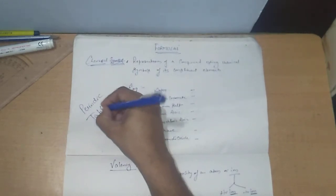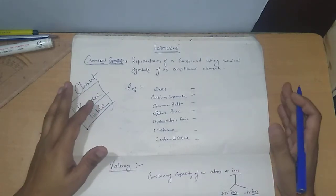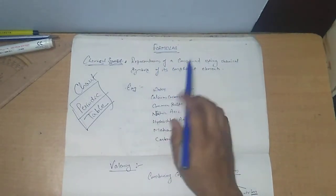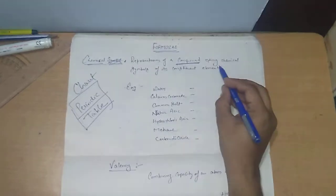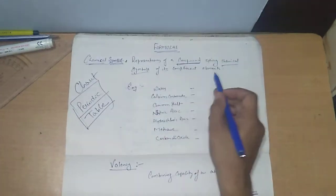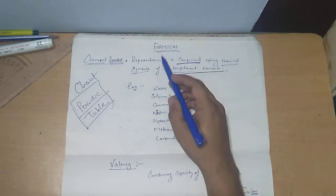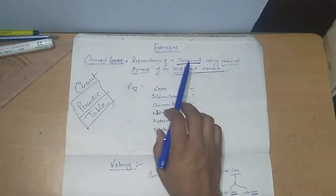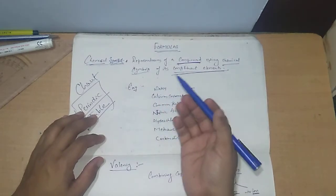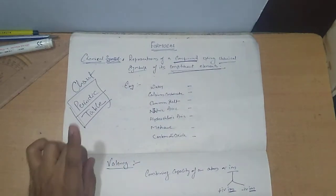Please search the periodic table on the internet and study the chart carefully. Now, coming back to formulas — chemical formulas are the representation of compounds using the chemical symbols of their constituent elements. After seeing some examples, you will be able to understand this clearly.